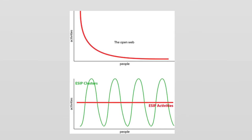What does this mean? For one thing, this explains how clusters defeat the curse of the power law curve. The power law curve is how actual work in open networks usually gets distributed — it's the curve which says that 10 percent of members do 90 percent of the work.